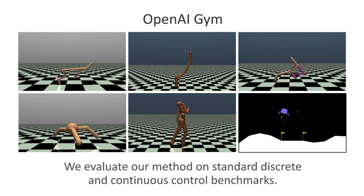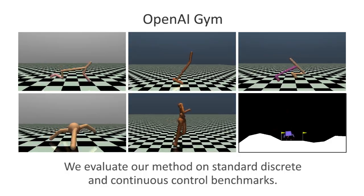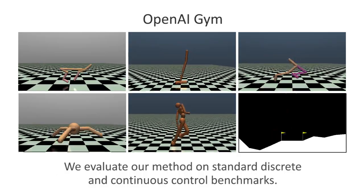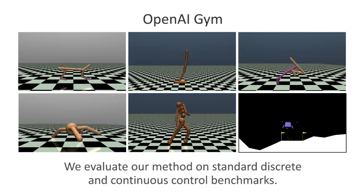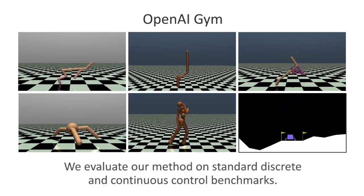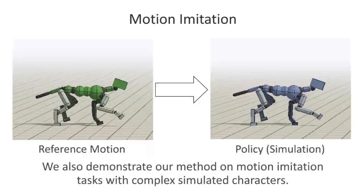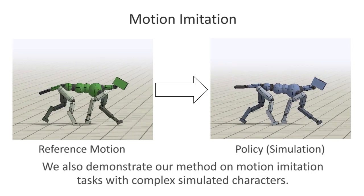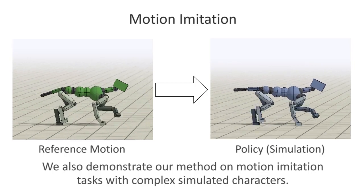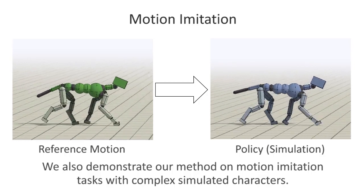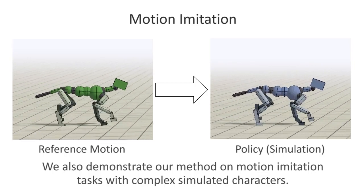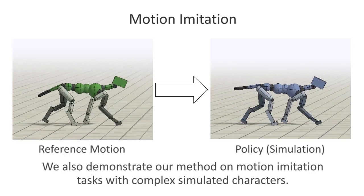We evaluate our method on standard discrete and continuous control benchmarks. We also demonstrate our method on motion imitation tasks with complex simulated characters.